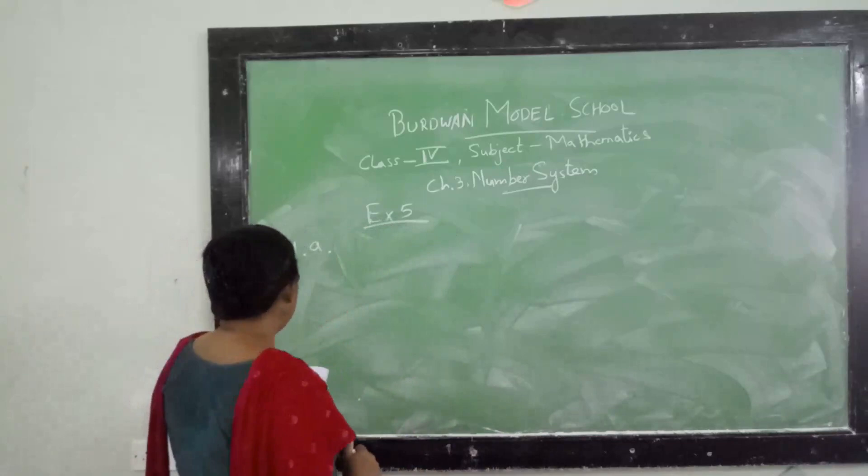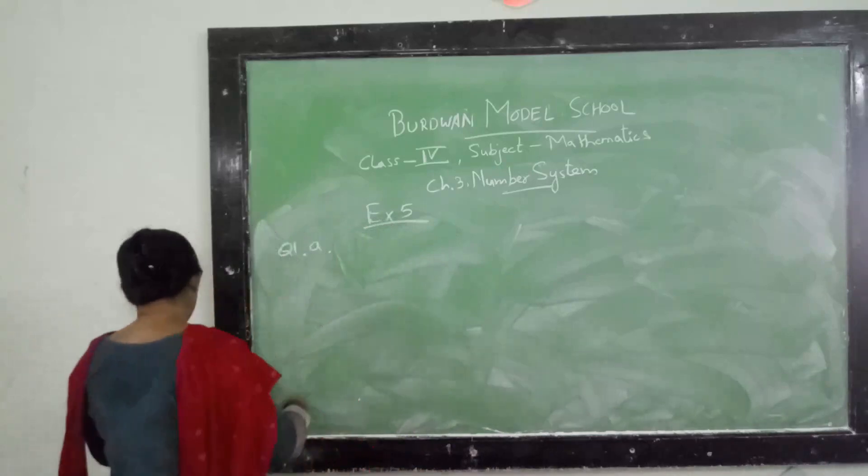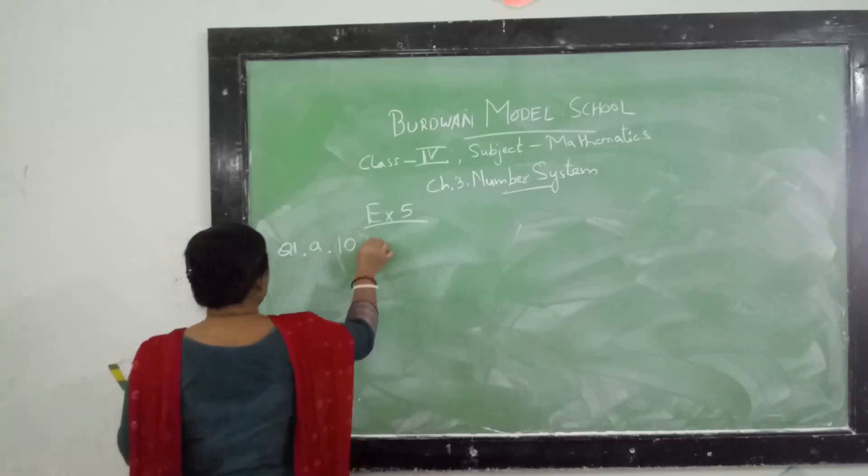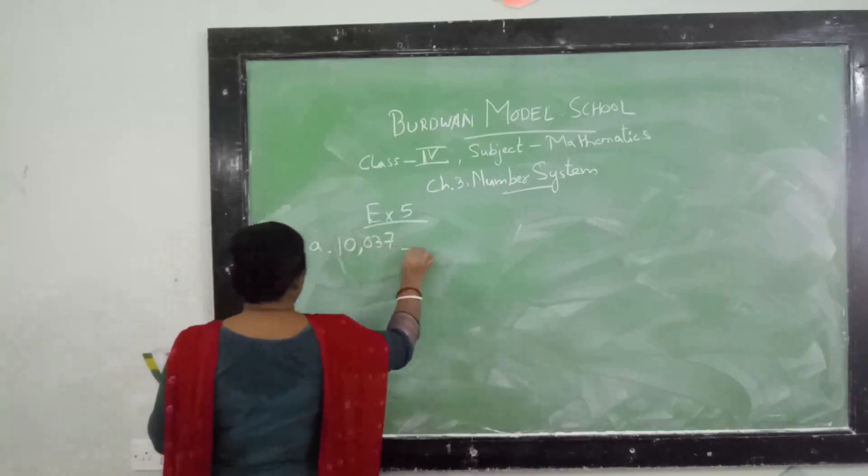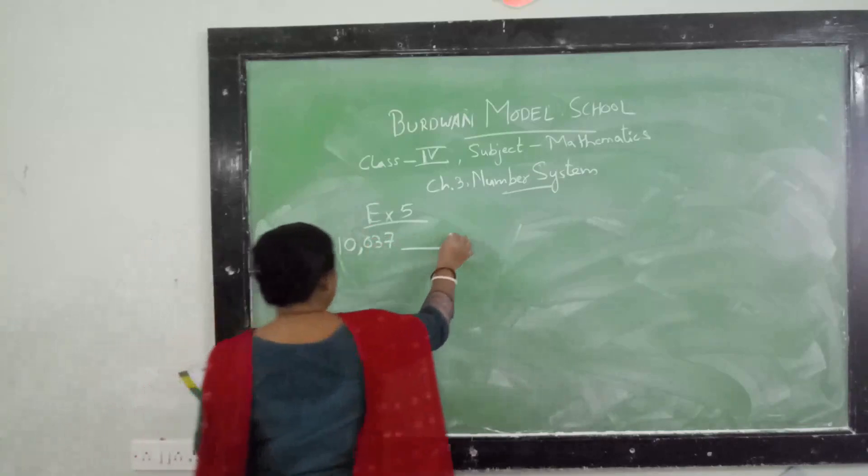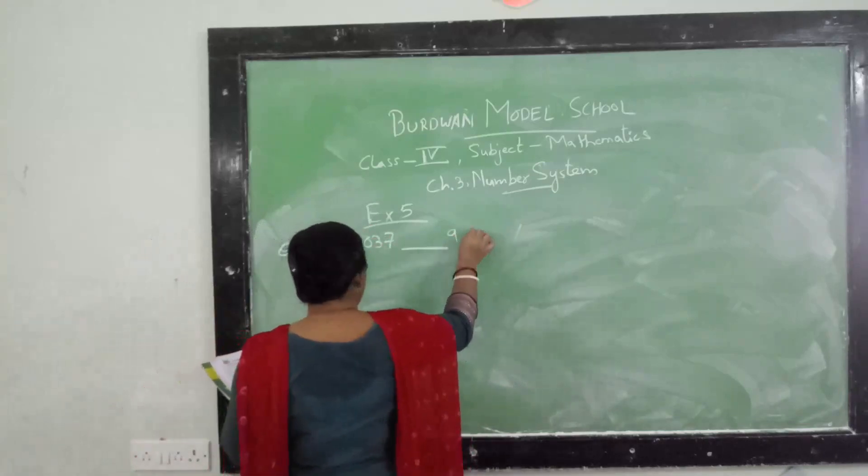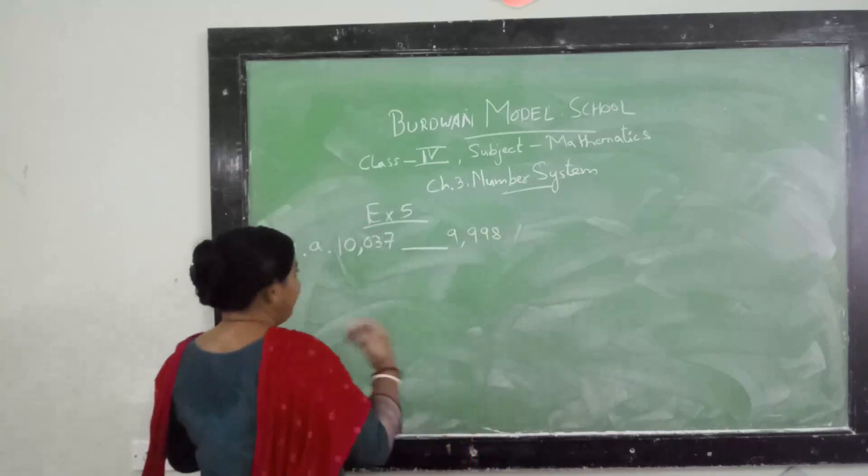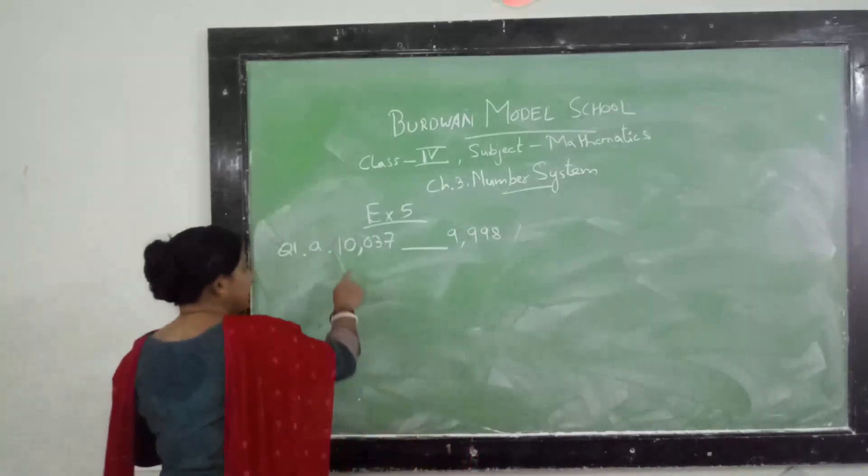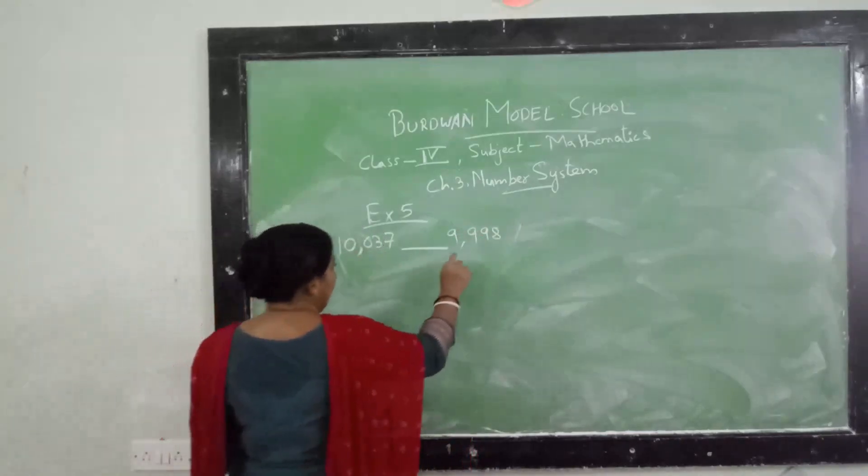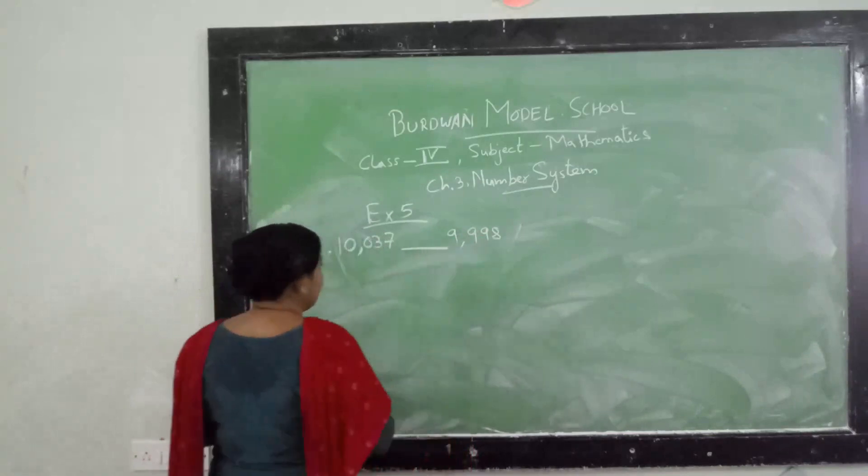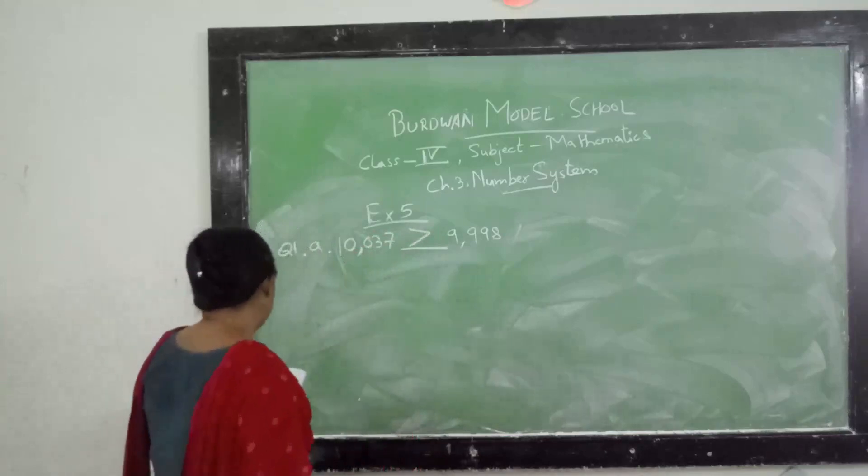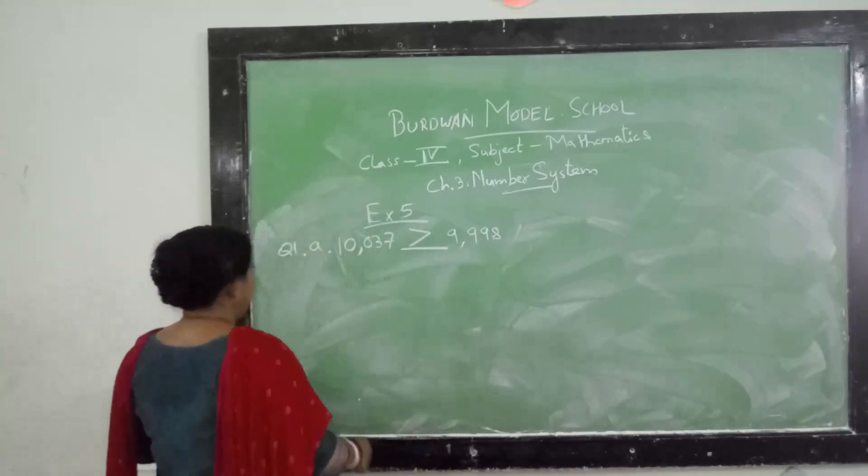I am writing Exercise 5, question number 1a. It is given 10,037, then dash, and 9,998. When we are saying in words, we are saying 10,037 and this we are saying 9,998. That means which is bigger? This one is bigger, so you will give a greater than sign.